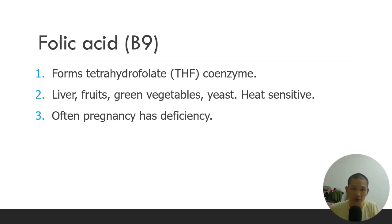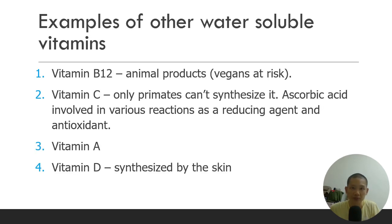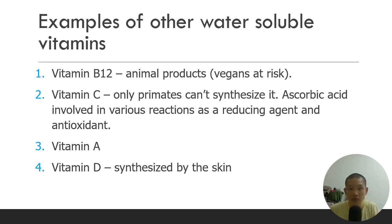Folic acid, vitamin B9, is also part of a coenzyme, and deficiency is very common during pregnancy. Vitamin B12 is found in animal products, so vegans and vegetarians are at risk of deficiency. All animals can produce vitamin C except primates and fruit bats and guinea pigs, because they eat a lot of fruit and have lost the ability to synthesize it.